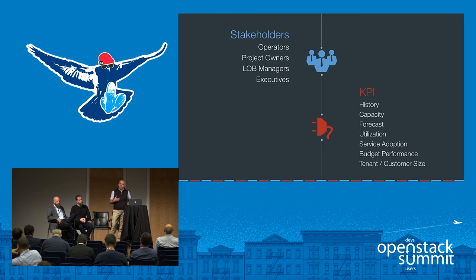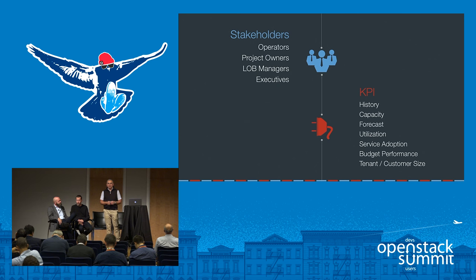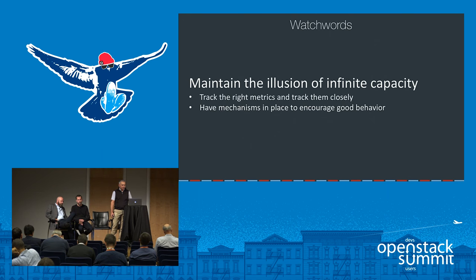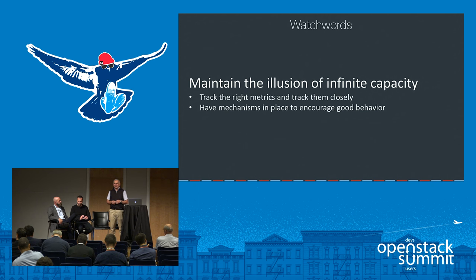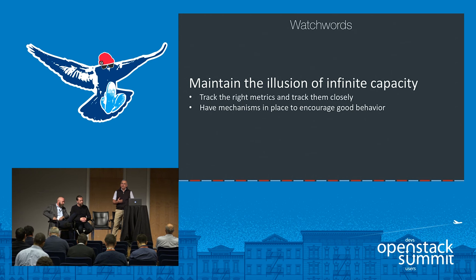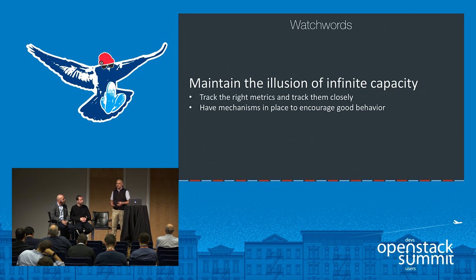KPIs — having a set of KPIs around what your OpenStack cloud looks like, being able to collect and share that data, is critical. From a day-two perspective: cloud should look to consumers like it has infinite capacity, but reality is it doesn't. The key first step is to capture the right metrics and watch them closely — usage, trends, top consumers. Then have mechanisms to encourage good behavior and stewardship of ultimately scarce resources.